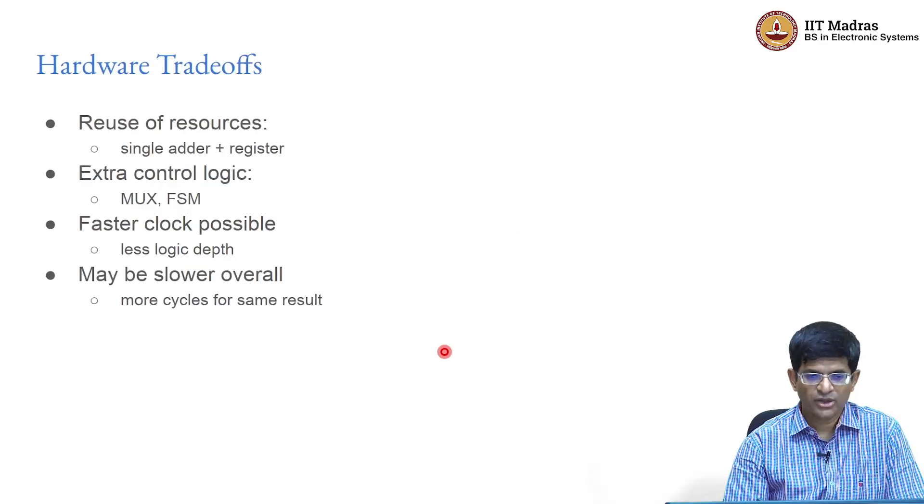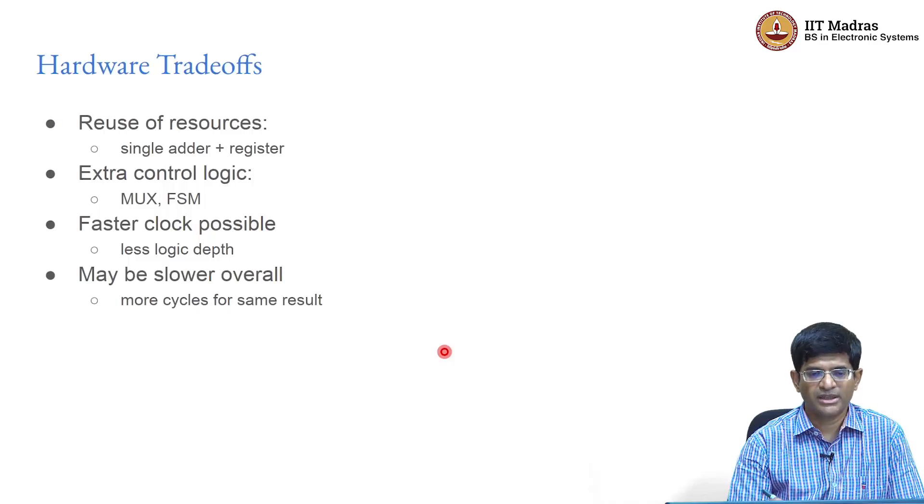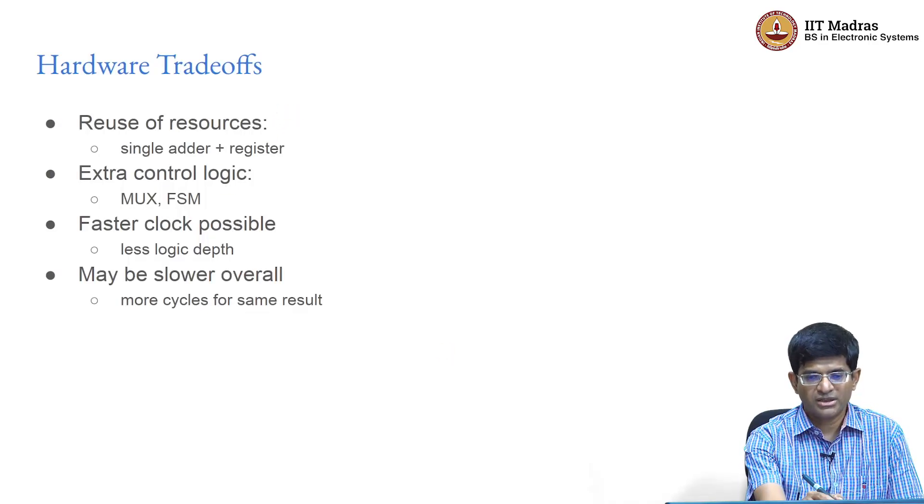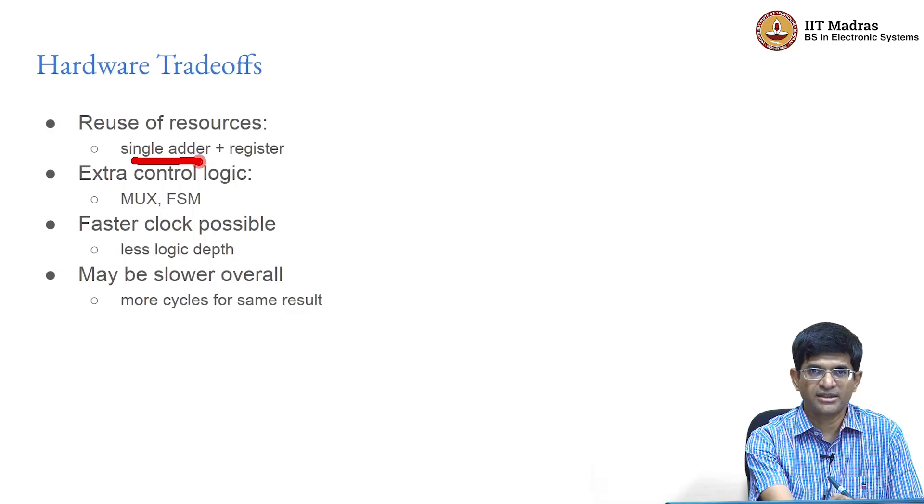At the end of the day, why would we do something like this? We have some kind of tradeoffs in the hardware. In this design with the control and data path, we could potentially reuse resources. In the design I showed you, we used basically a single adder plus a register to perform a multiplication. It does not matter whether it is 8 bits, 16 bits, 32 bits - it is just a single adder and a register. Of course, the size of the adder increases, but essentially the same thing. The state machine gets a little bit more complicated, the width of the individual operations may increase a little bit, but that is pretty much all that you need to know about.